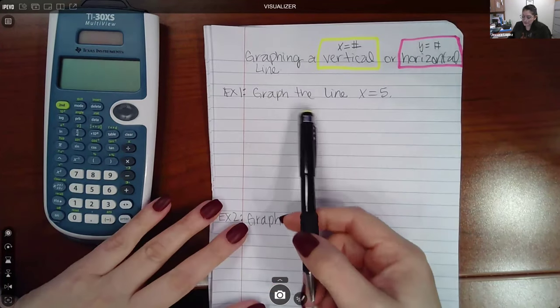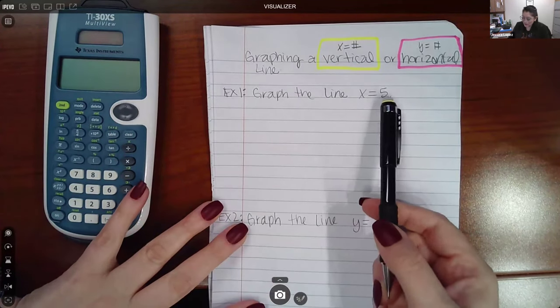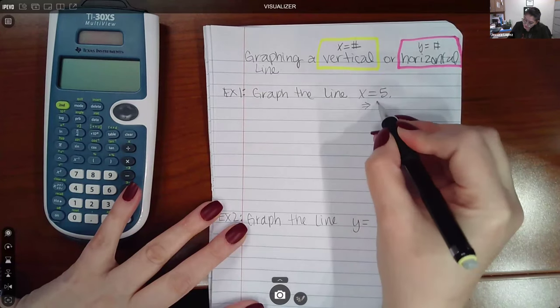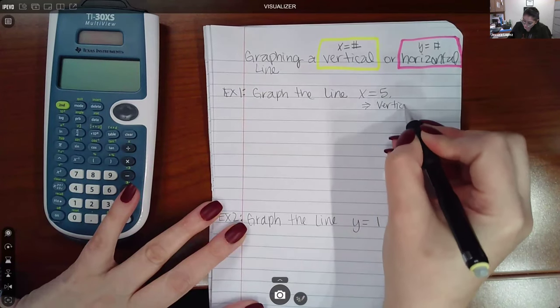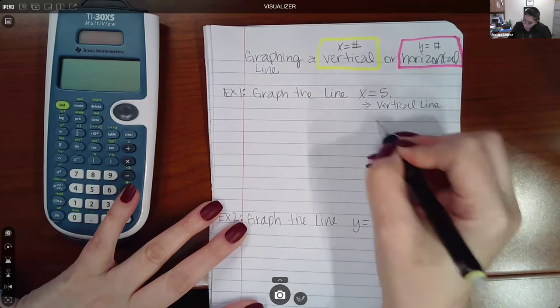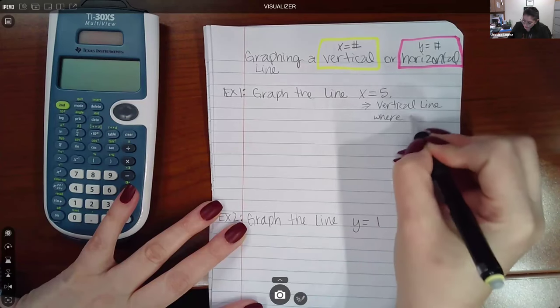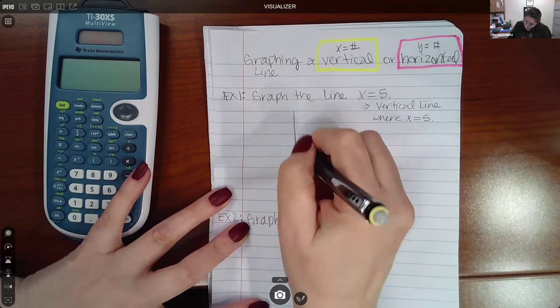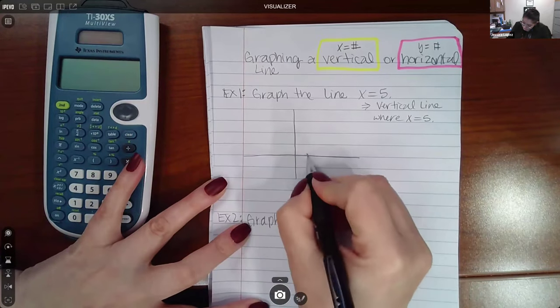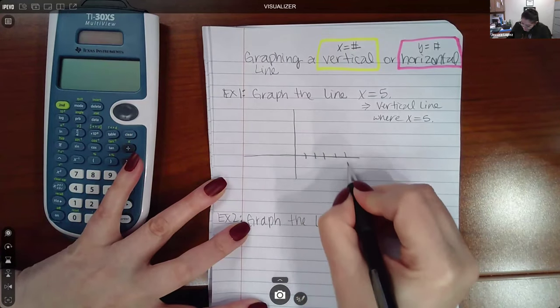So what that means is if I have X equals 5, that automatically tells me I'm talking about a vertical line where X equals 5. So if I draw my coordinate system, here's 1, 2, 3, 4, 5,